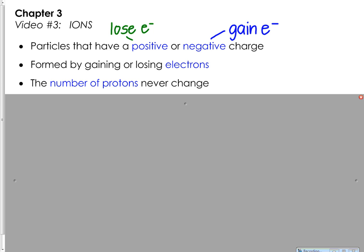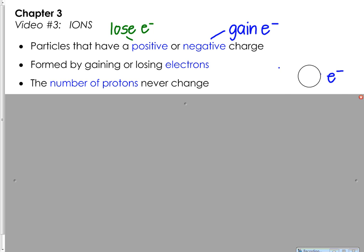The number of protons in an atom will never ever change. So if you look up sodium, which is element number 11, we know that sodium should have 11 protons. As an atom it is neutral, which means it also has 11 electrons. Now sodium, if it's going to form an ion, will lose some of these electrons, and if it loses electrons it becomes positively charged.